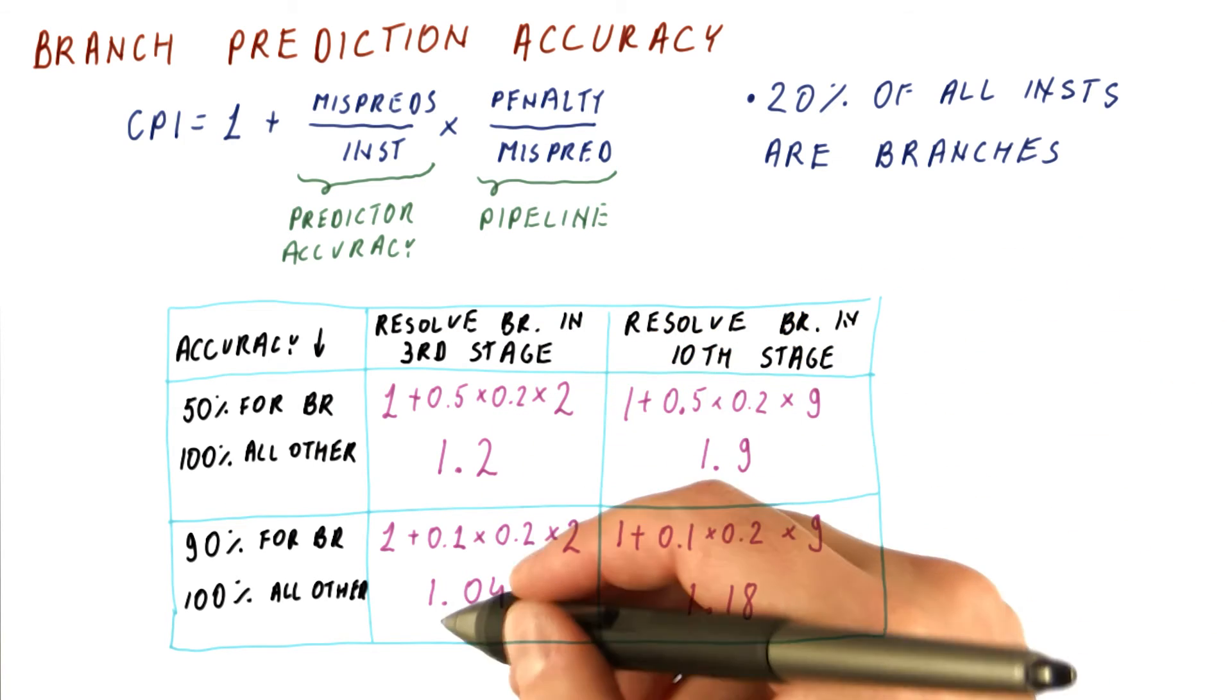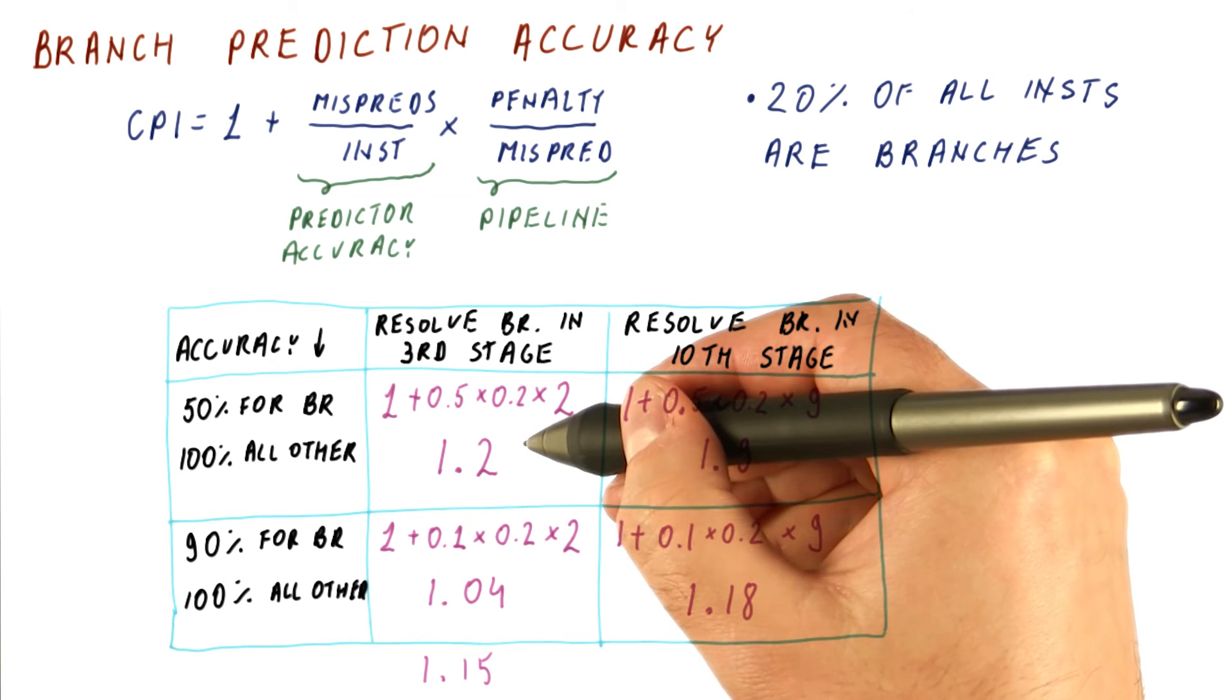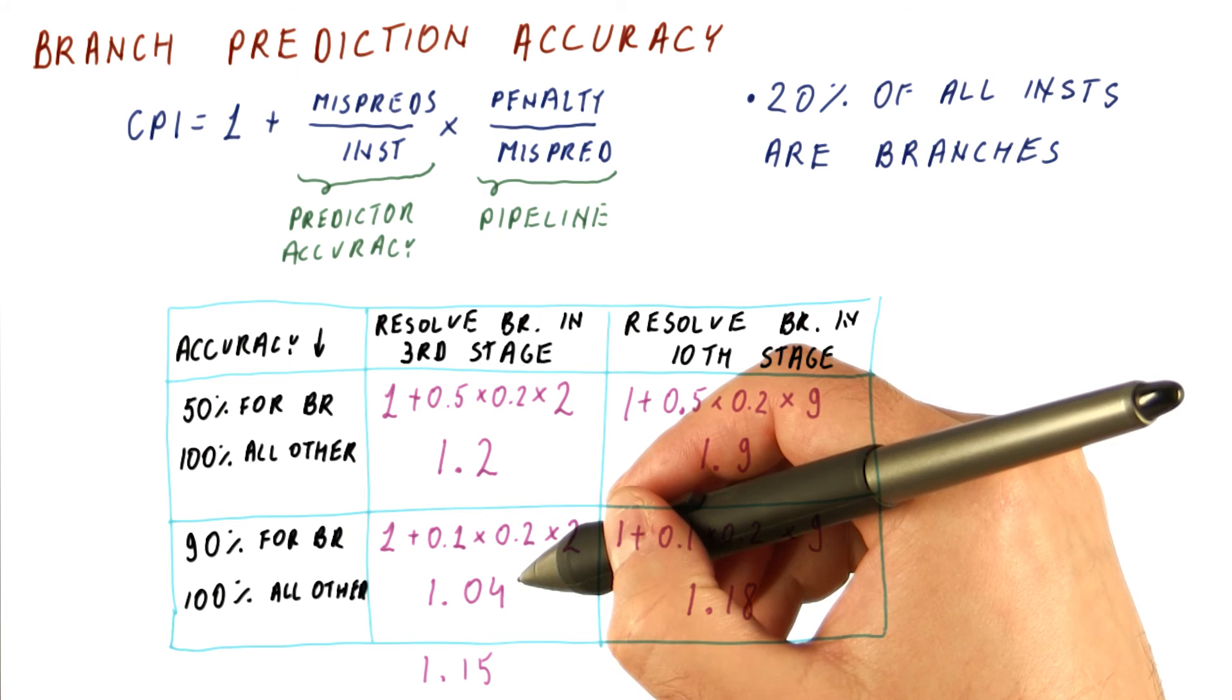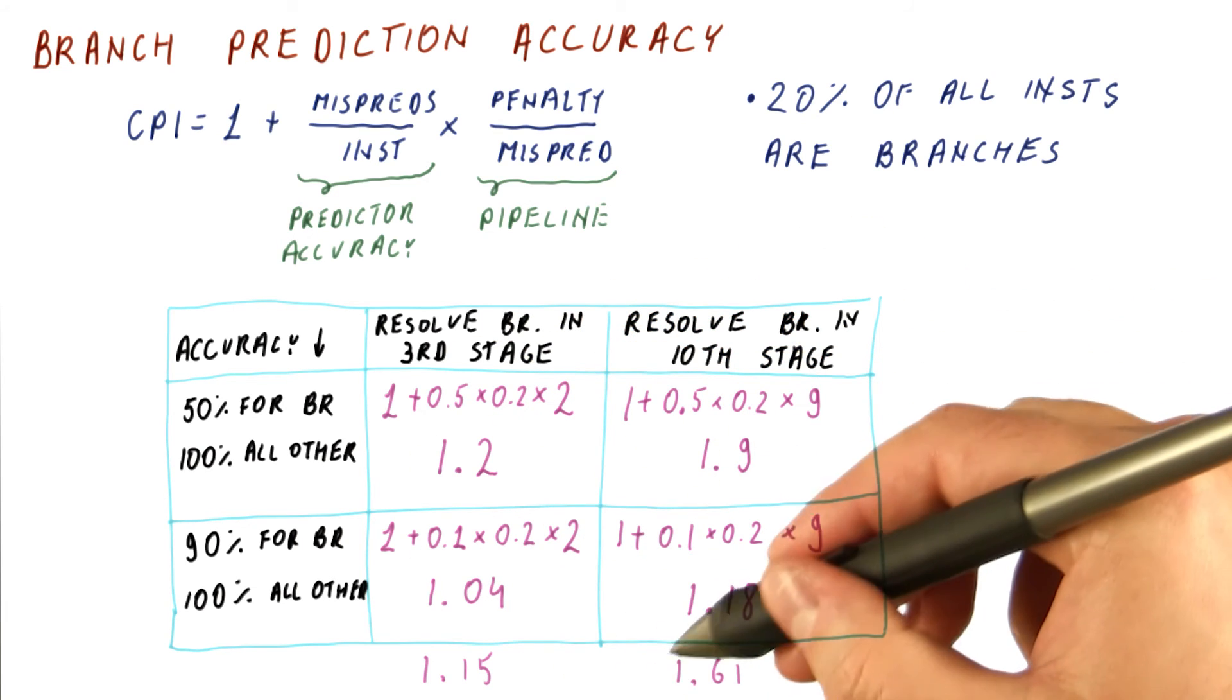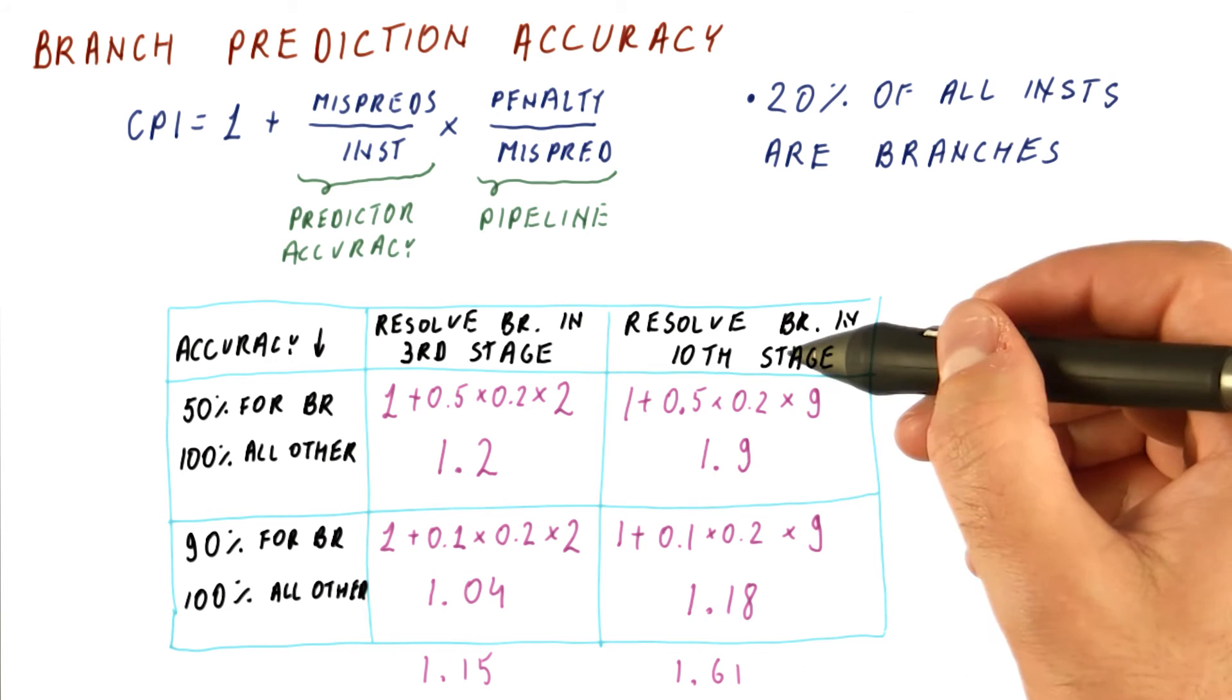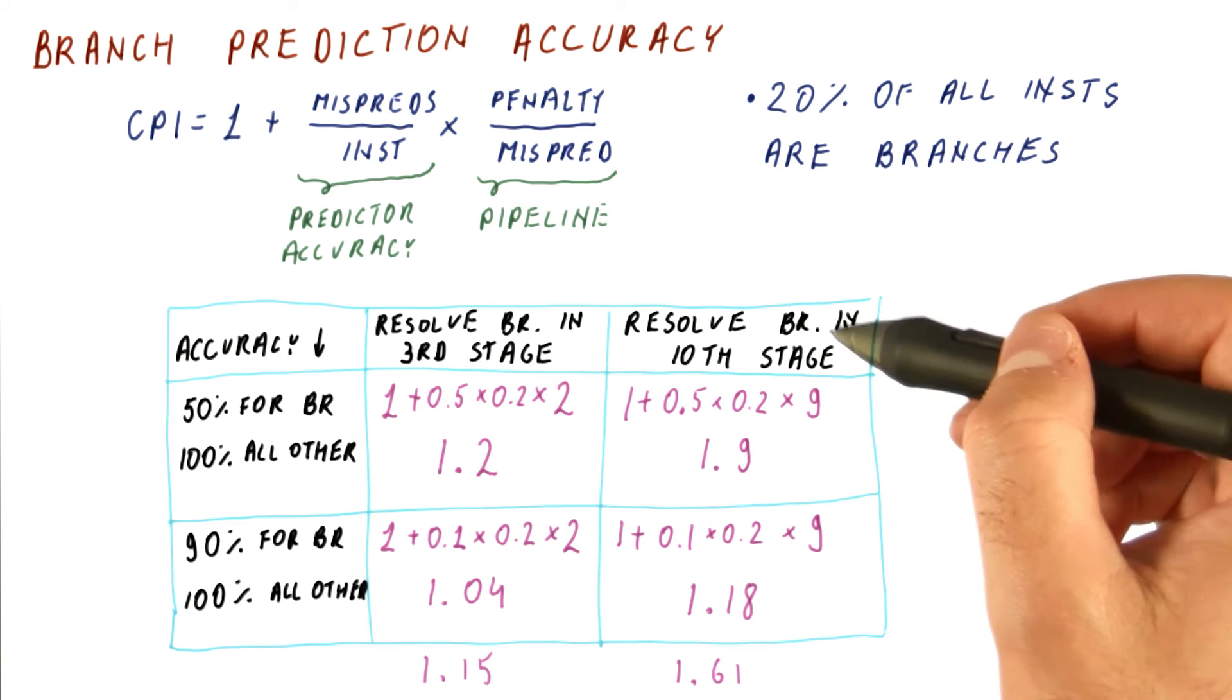Here we have a speedup of 1.15 when we go from worse to better predictor in our shallow pipeline. But here we have a speedup of 1.61 when we go from the same worse predictor to the same better predictor in a deeper pipeline.